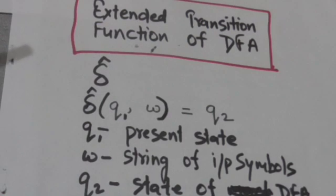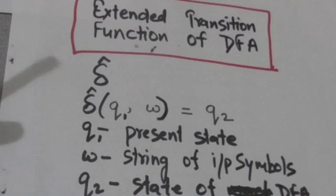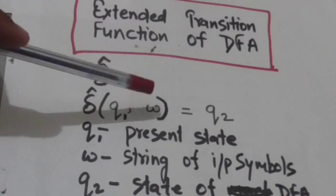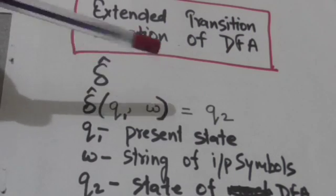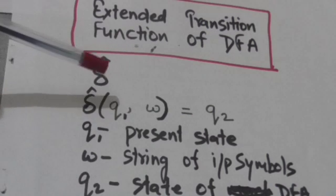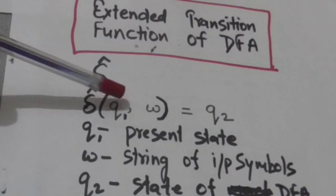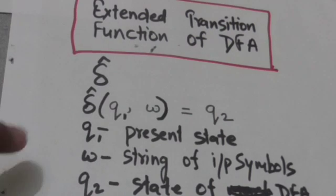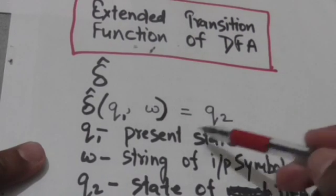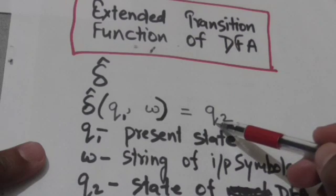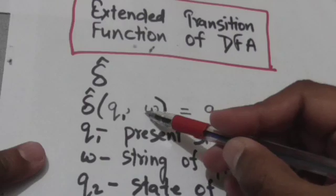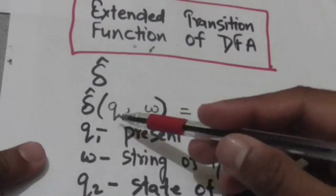But in the extended transition function, the second argument is a string of input symbols and its first argument is the present state. Its output would be the state in which the machine would be after reading the string of input symbols from the present state.